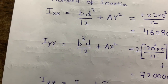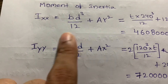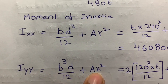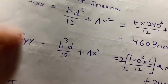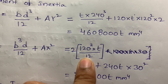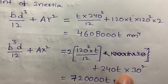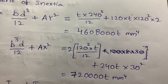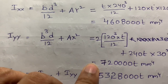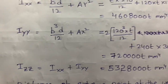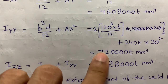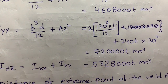Next, IYY for the same rectangle uses the formula B³D/12 + AX². So: 120³ × T / 12 plus 240T × 30² × 2 for both sides welding. After getting IXX and IYY values, using the perpendicular axis theorem, IZZ equals IXX plus IYY, giving a total of 5,328,000T mm⁴.